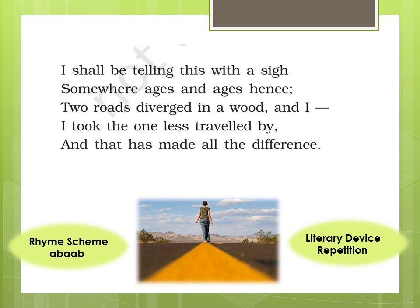The rhyme scheme in this last stanza is also ABAAB, with last words: 'sigh', 'hence', 'I', 'by', and 'difference'. The literary device in this stanza is repetition — when words are repeated. Here in line two, 'somewhere ages and ages hence', the word 'ages' appears twice. This is the literary device of repetition.